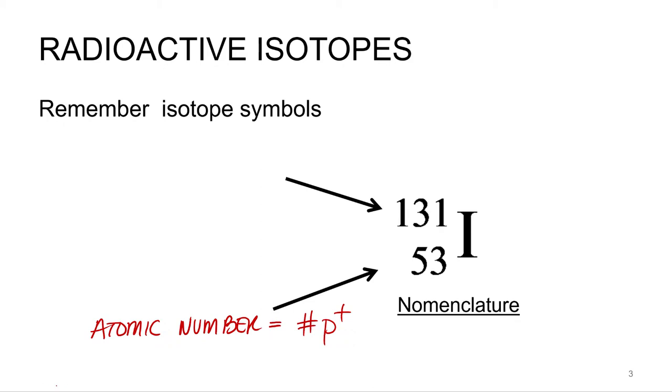The mass number is probably the other number. 131 is iodine's mass number for this isotope. And what did that equal? Protons plus neutrons. Good. So the protons and neutrons. The sum of the protons and neutrons is the mass number.